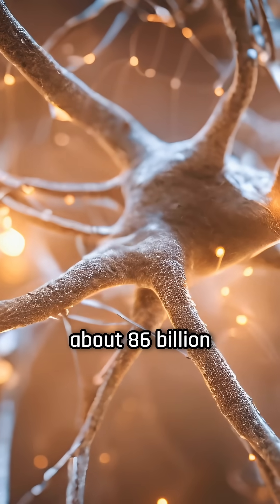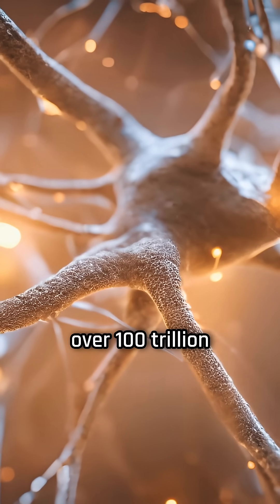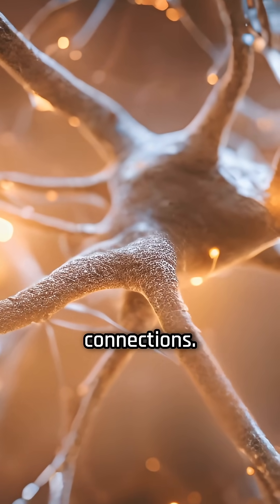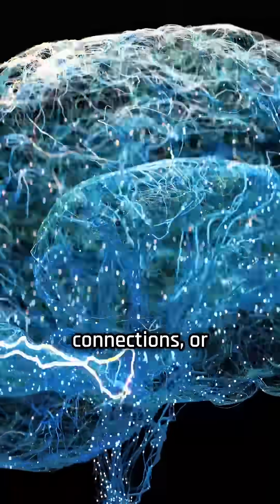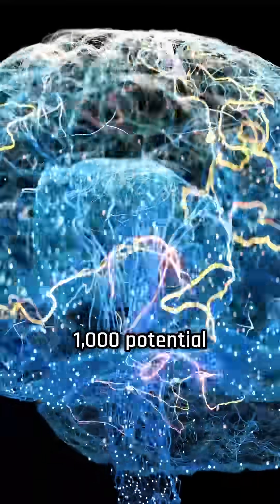On average, your brain contains about 86 billion neurons, forming over 100 trillion connections. That means each neuron can make around 1,000 connections, or 1,000 potential synapses.